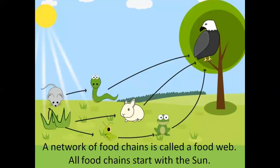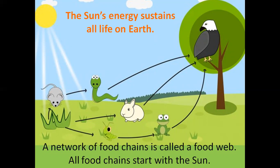A network of food chains is called a food web. All food chains start with the Sun. The Sun's energy sustains all life on Earth.